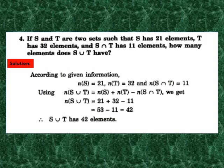Question 4: if S and T are two sets such that S has 21 elements, T has 32 elements and S intersection T has 11 elements, how many elements does S union T have? NS equals 21, NT equals 32, NS intersection T equals 11. Using the formula: NS union T equals 21 plus 32 minus 11, which gives 42. So S union T has 42 elements.